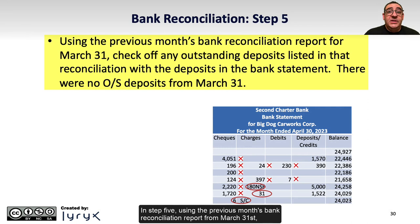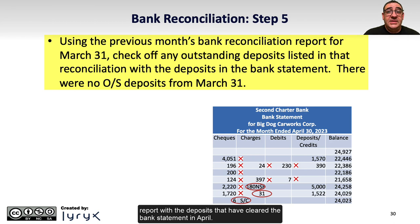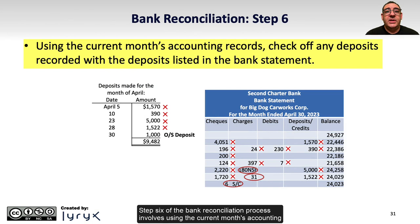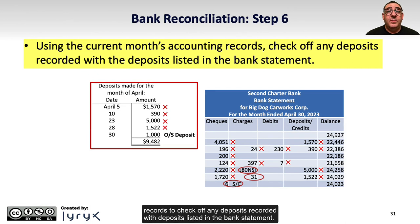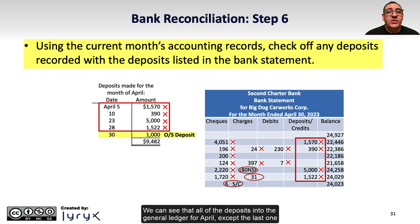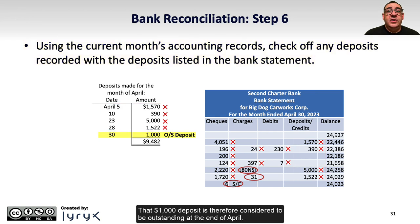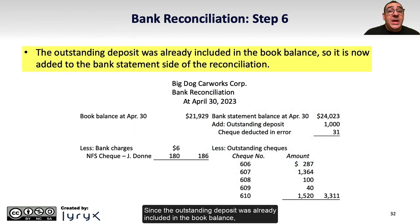In Step 5, using the previous month's bank reconciliation report from March 31st, we check off any outstanding deposits listed in the reconciliation against the deposits that have cleared the bank statement in April. We can see that there were no outstanding deposits from March 31st — they've all cleared the bank in April. Step 6 involves using the current month's accounting records to check off any deposits recorded against deposits listed in the bank statement. All of the deposits in the general ledger for April, except the last one for $1,000 on April 30th, have cleared the bank. That $1,000 deposit is therefore considered outstanding at the end of April, and since it was already included in the book balance, it's added to the bank statement side of the reconciliation.